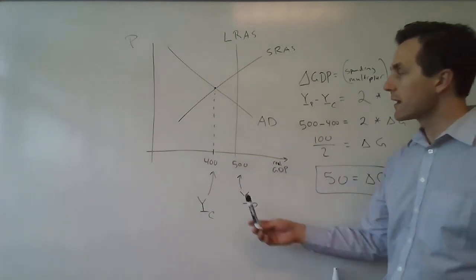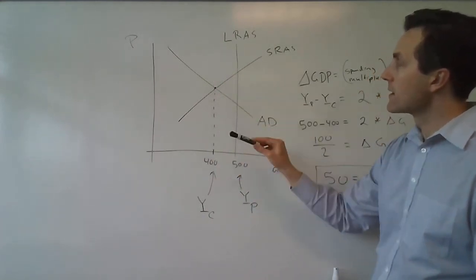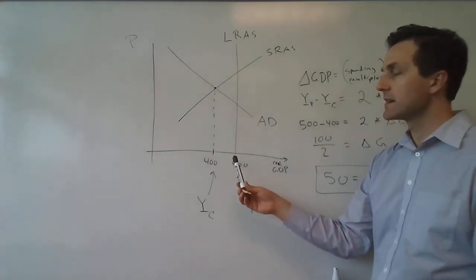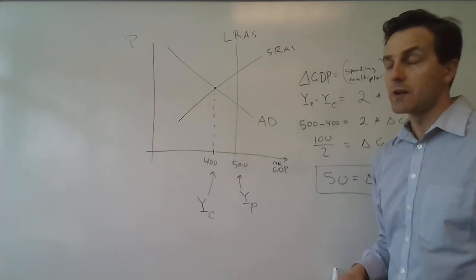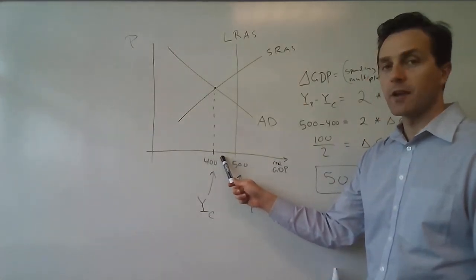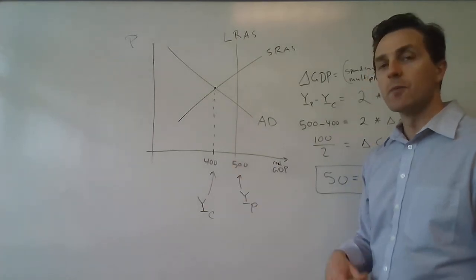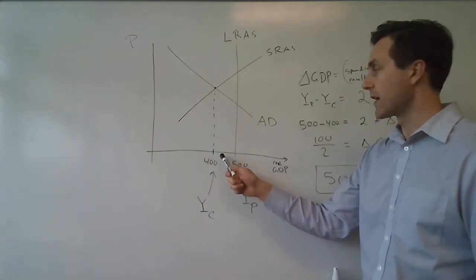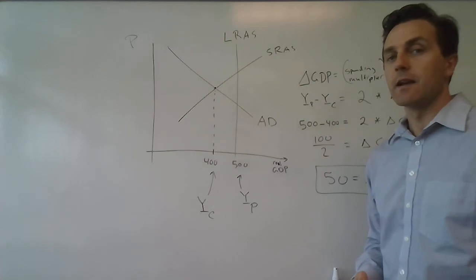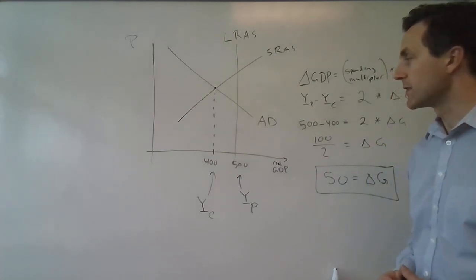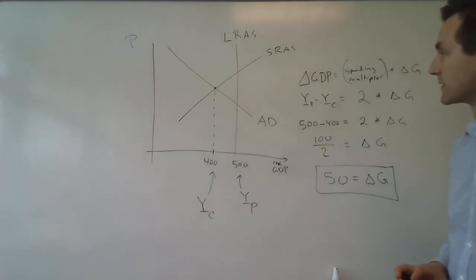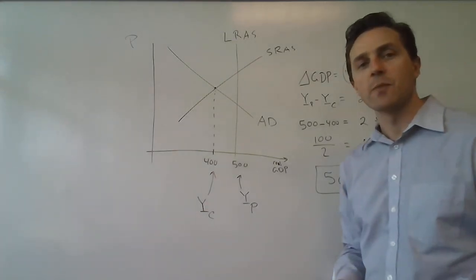The idea is that we want to raise aggregate demand enough to get to potential output. Since the spending multiplier is greater than one — it's two in this case — the government only needs to spend half the amount of the recessionary gap, and then the multiplier process will take care of the rest. The government spending will increase output to 450, and then the spending multiplier process will fill in the rest and get us all the way back up to potential output. Thank you very much for watching.